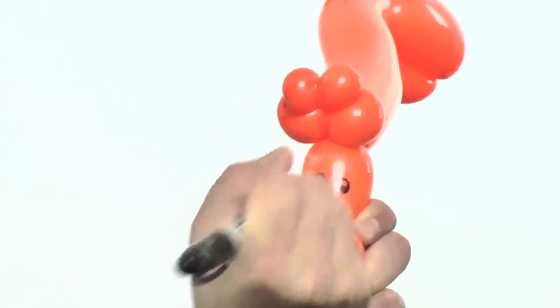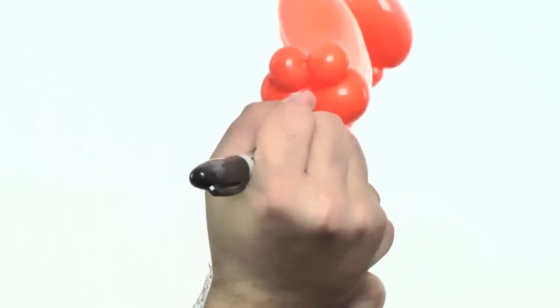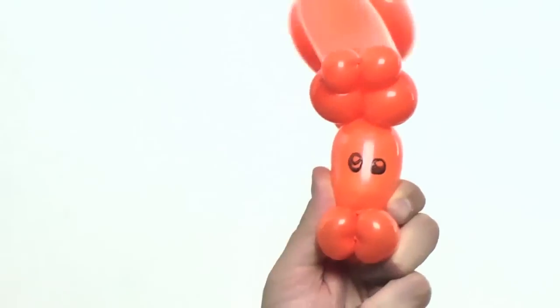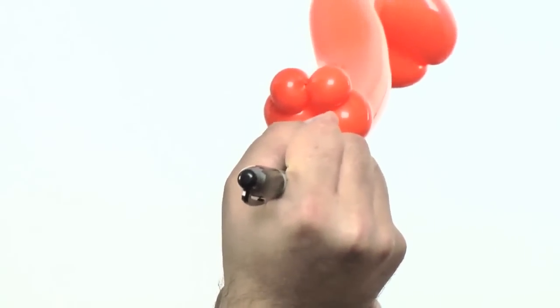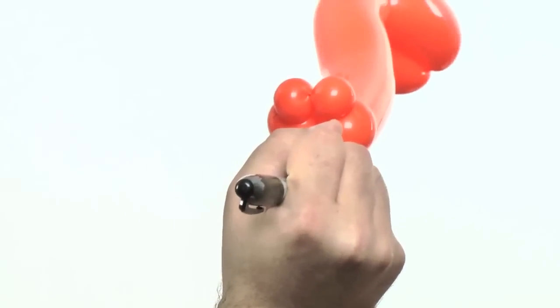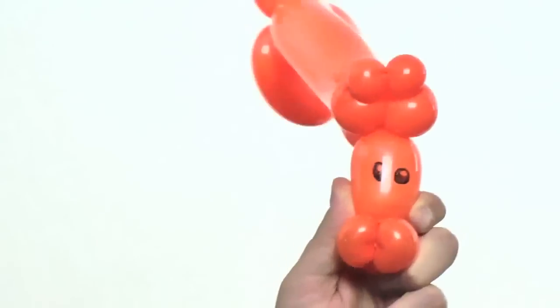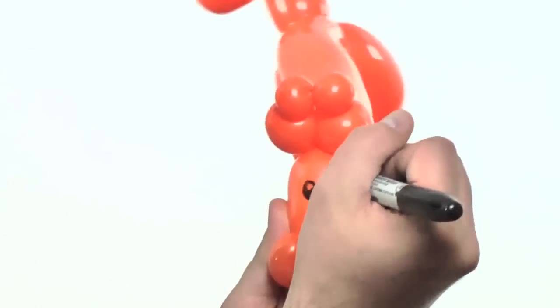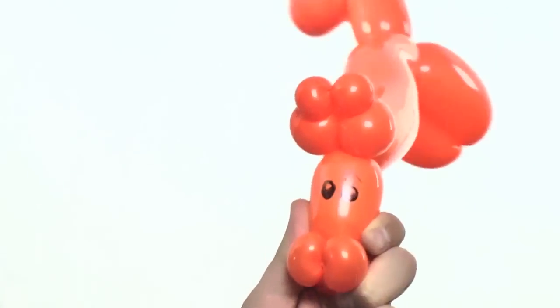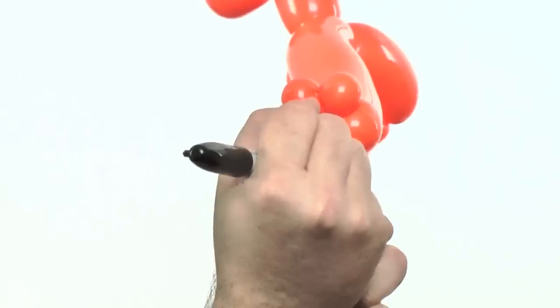There we have one eye. Now I do that again on the other side. Large circle, make a smaller circle, fill in the rest. If it's anything like my marker now where it's sort of running out of ink, go ahead and go over it a couple of times. There we have our eyes.